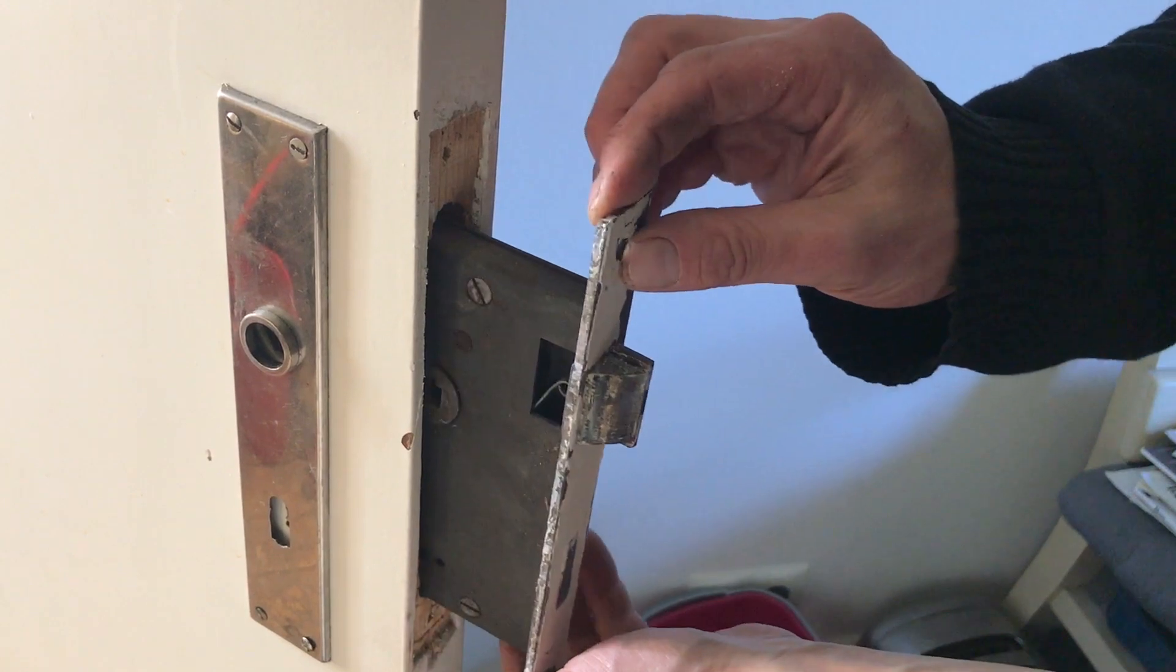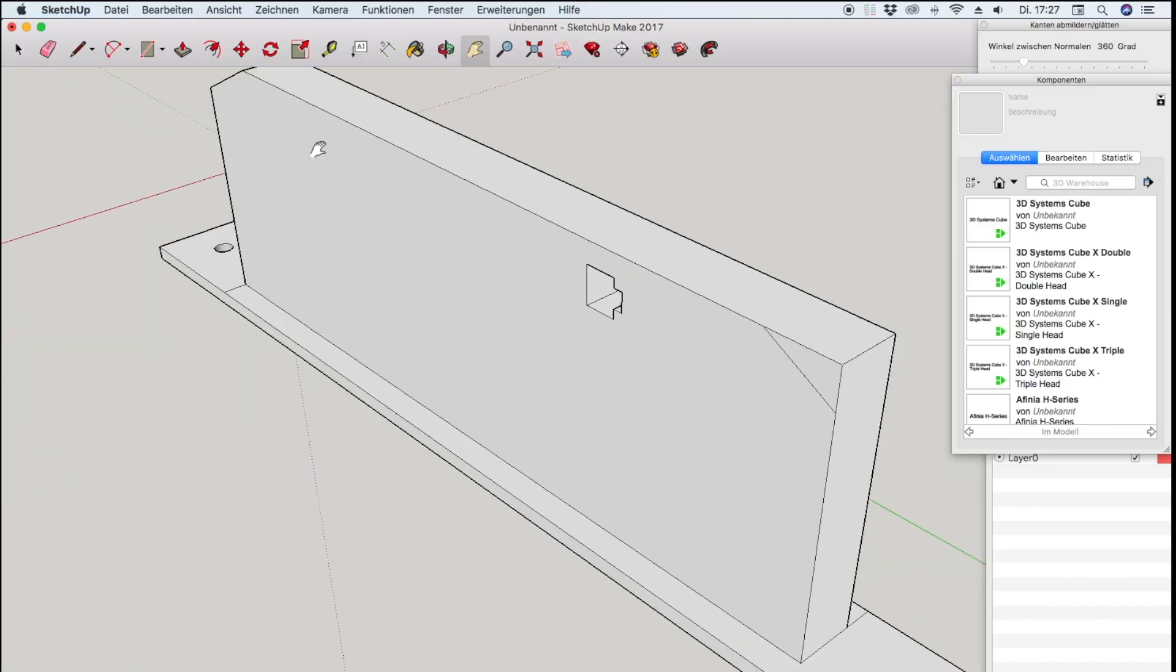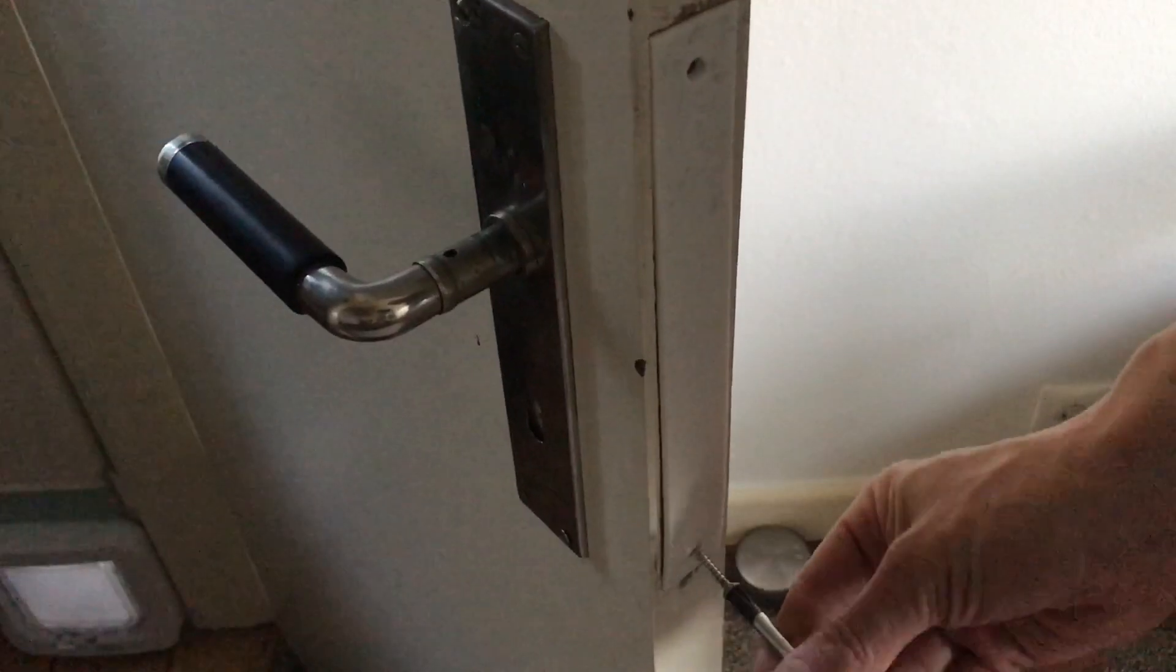At the door I remove the lock because if that snaps in all the rest wouldn't work. A replacement is designed in SketchUp and printed with my 3D printer.